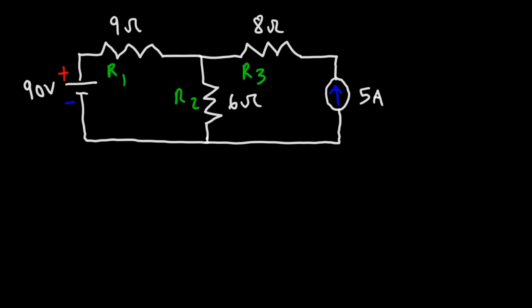Using mesh current analysis, calculate the current flowing through each resistor as well as the electric potentials at these points. Let's say this is the ground with an electric potential of zero volts. What is the potential at point A, B, and C? Feel free to pause the video and use mesh current analysis to solve this circuit.